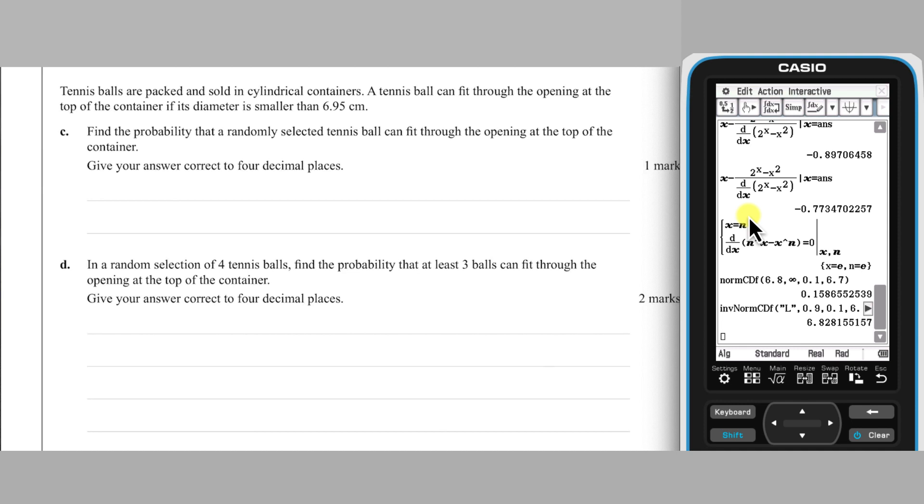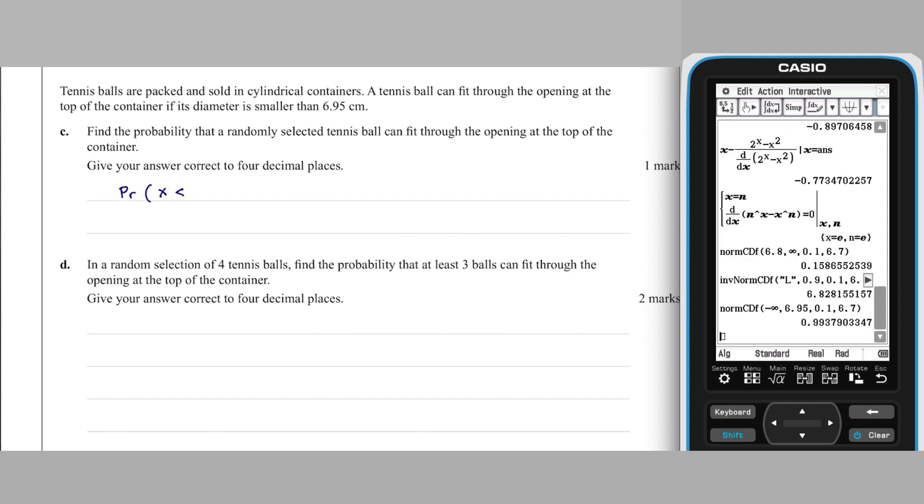Part C asks for the probability that a randomly chosen tennis ball can fit in a can, meaning that it has a diameter of less than 6.95 cm. This is another normal CDF calculation. You can edit the arguments to the Part A calculation, making the first argument negative infinity and the second one 6.95, whilst not changing sigma and mu. Our 4 decimal place answer is 0.9938.